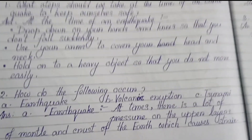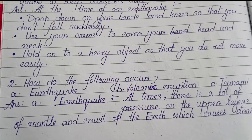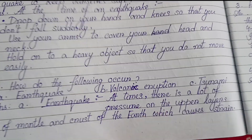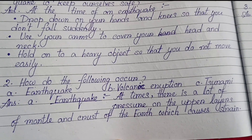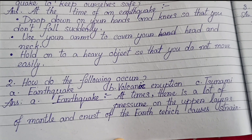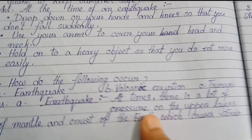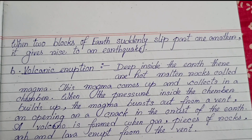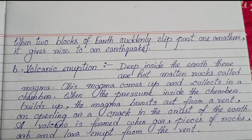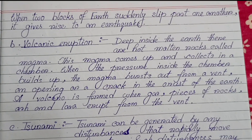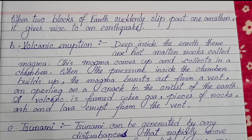Number two: How do the following occur? (a) Earthquake: At times there is a lot of pressure on the upper layers of the mantle and crust of the earth, which causes strain. When two blocks suddenly slip past one another, it gives rise to an earthquake.